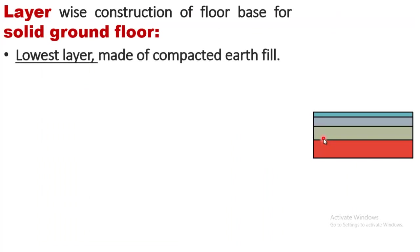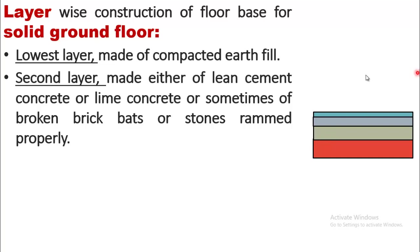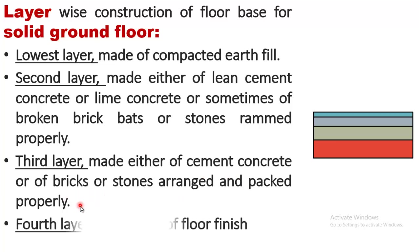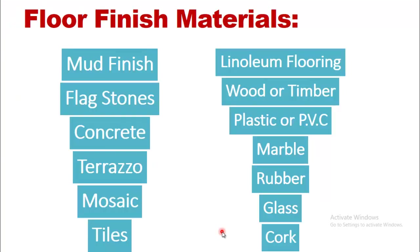Regarding layer-wise construction of a solid ground floor: the lowest layer is made of compacted earth fill; the second layer is made of lean concrete, lime concrete, or broken brick beds rammed properly; the third layer is made of cement concrete, bricks, or stones arranged and packed properly; and the fourth layer constitutes the floor finish, which is what we will discuss.